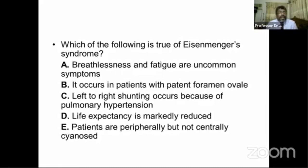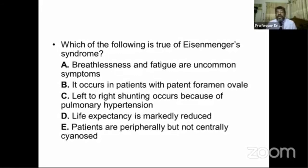Looking at the five options: breathlessness and fatigue are uncommon symptoms — actually these are common symptoms. It occurs in patients with patent foramen ovale — usually no Eisenmenger syndrome occurs with PFO because only a small amount of blood is shunted. Left-to-right shunting occurs because of pulmonary hypertension — actually right-to-left shunting occurs, not left-to-right. So these are not correct.